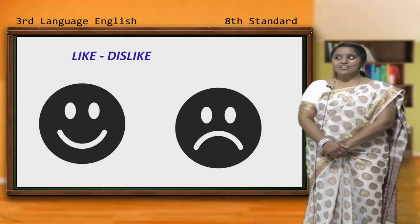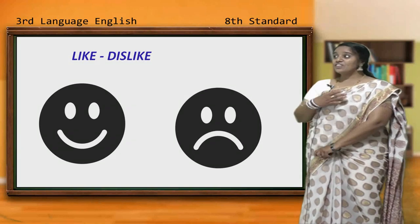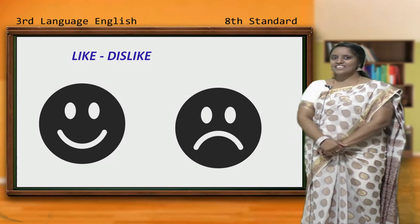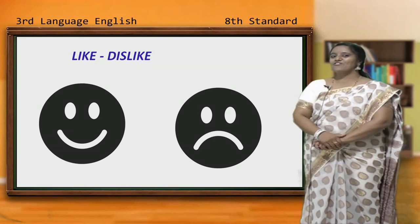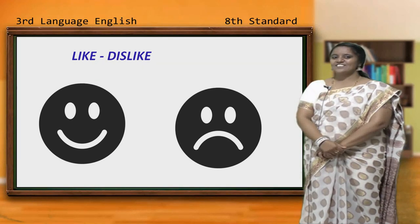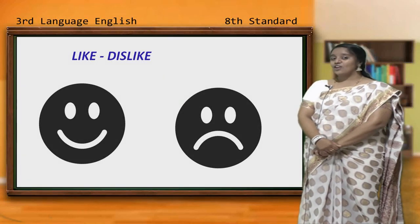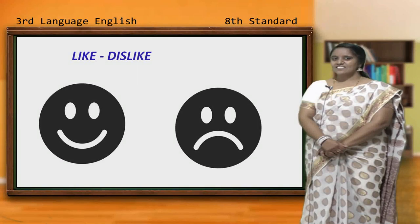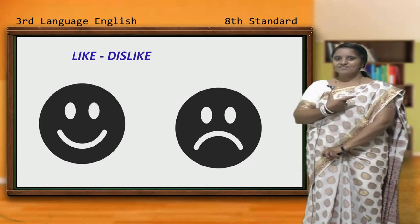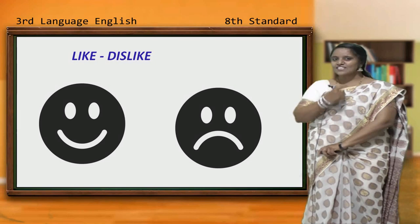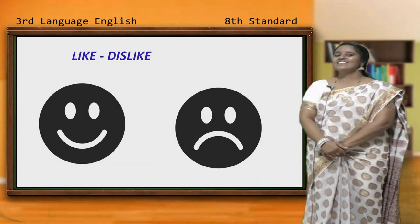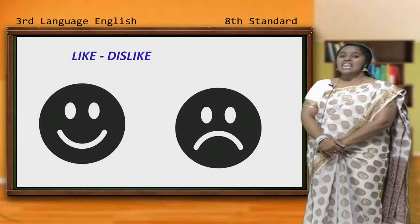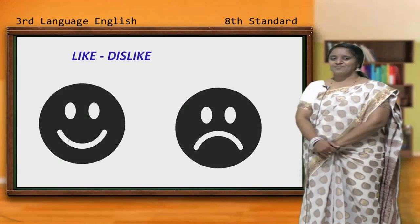Like — when we see the things which we love, suddenly, unknowingly, a smile comes on our face. Isn't it? Dislike — when we don't like the things, suddenly a frown face will come. Isn't it, children? The name of this activity is likes and dislikes.